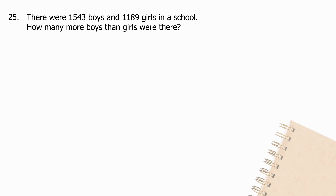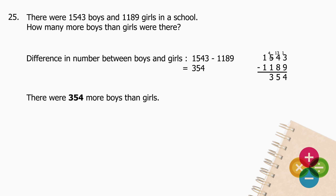Question 25: There were 1543 boys and 1189 girls in a school. How many more boys than girls were there? Subtract 1189 from 1543 and the difference is 354. There were 354 more boys than girls.